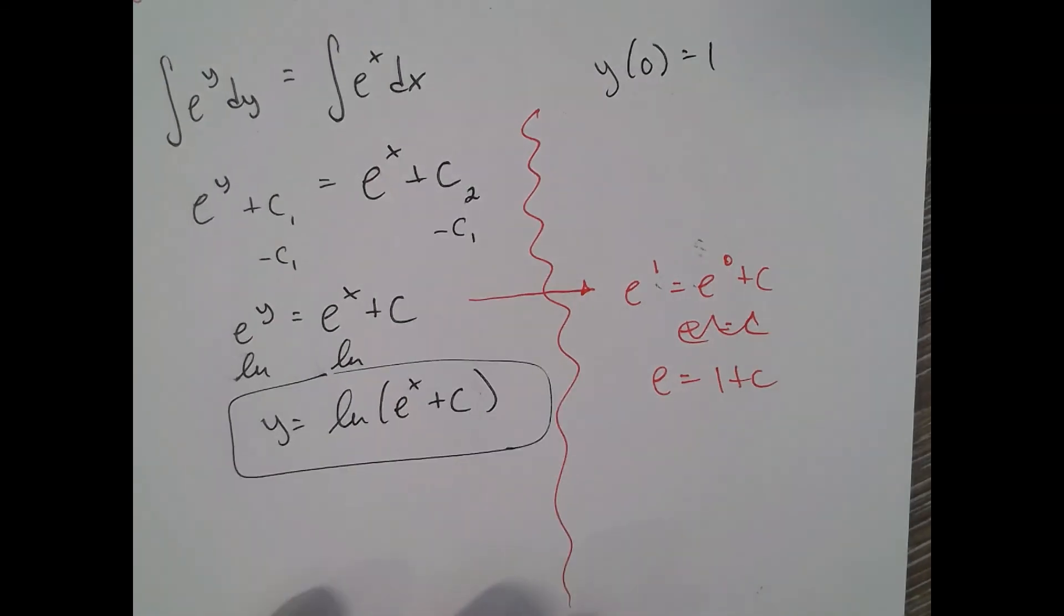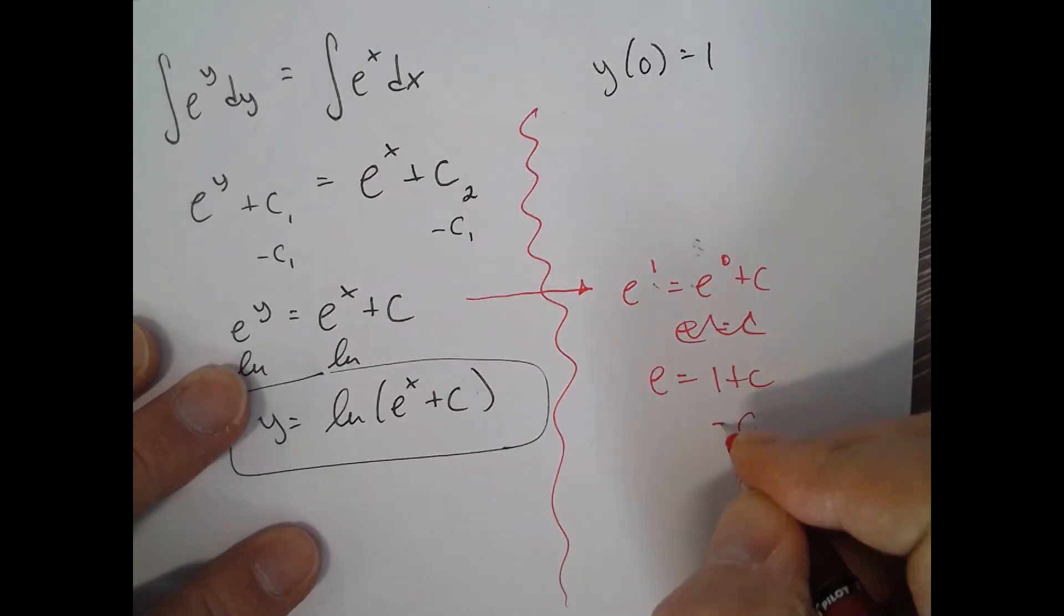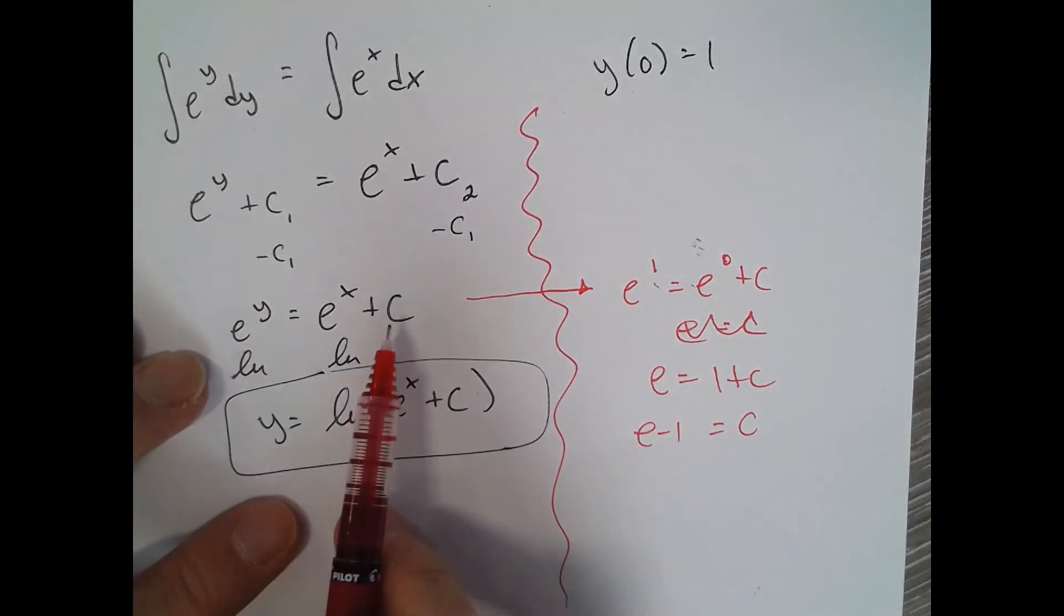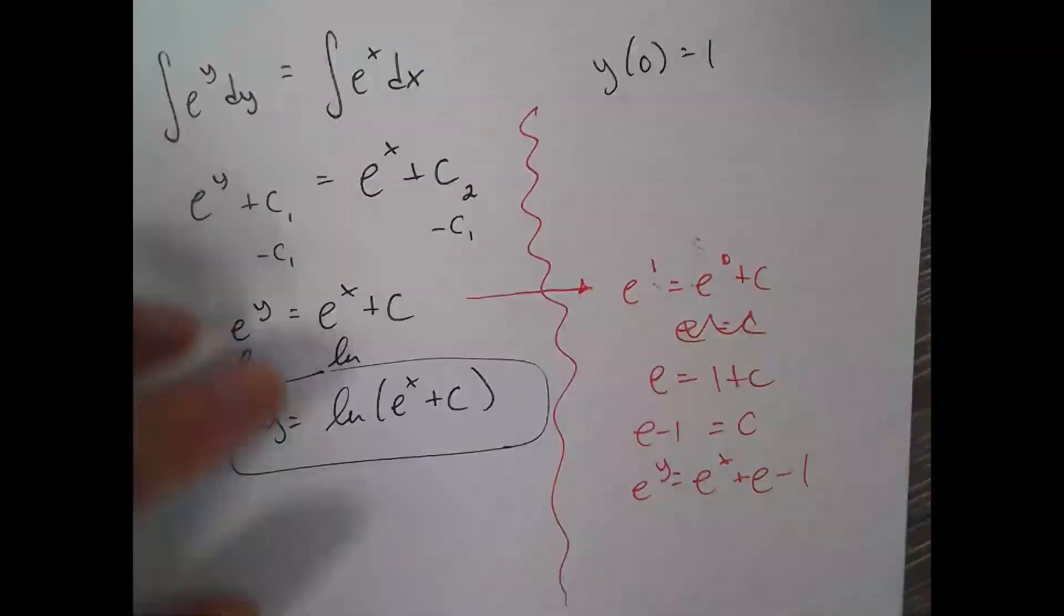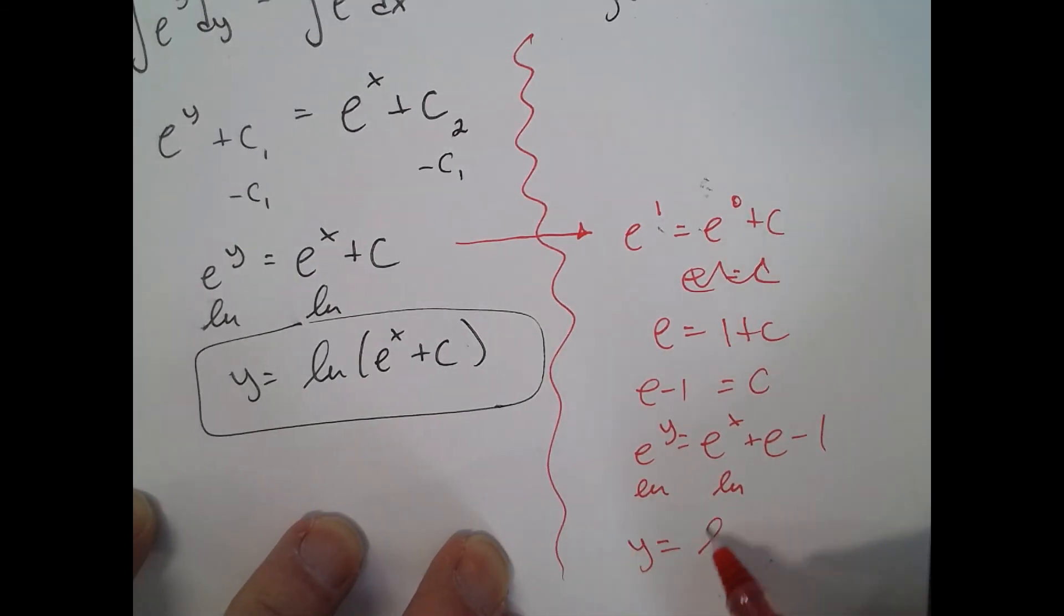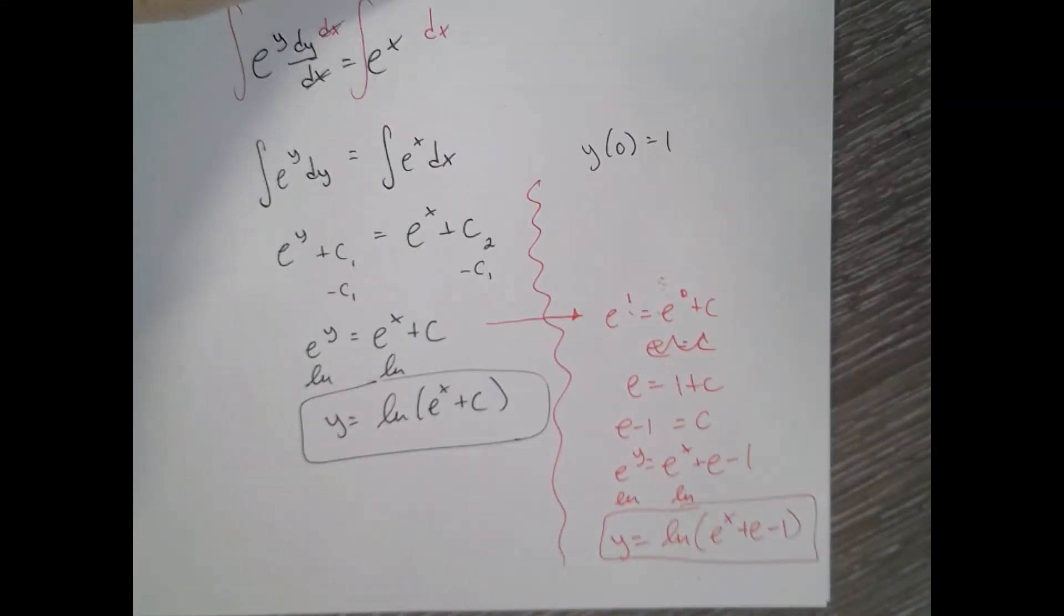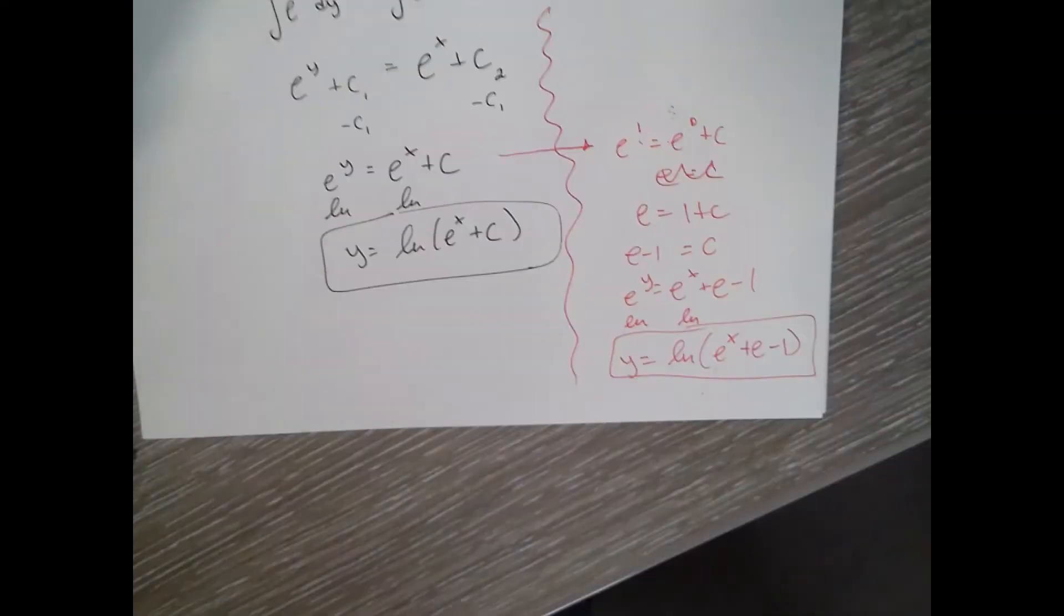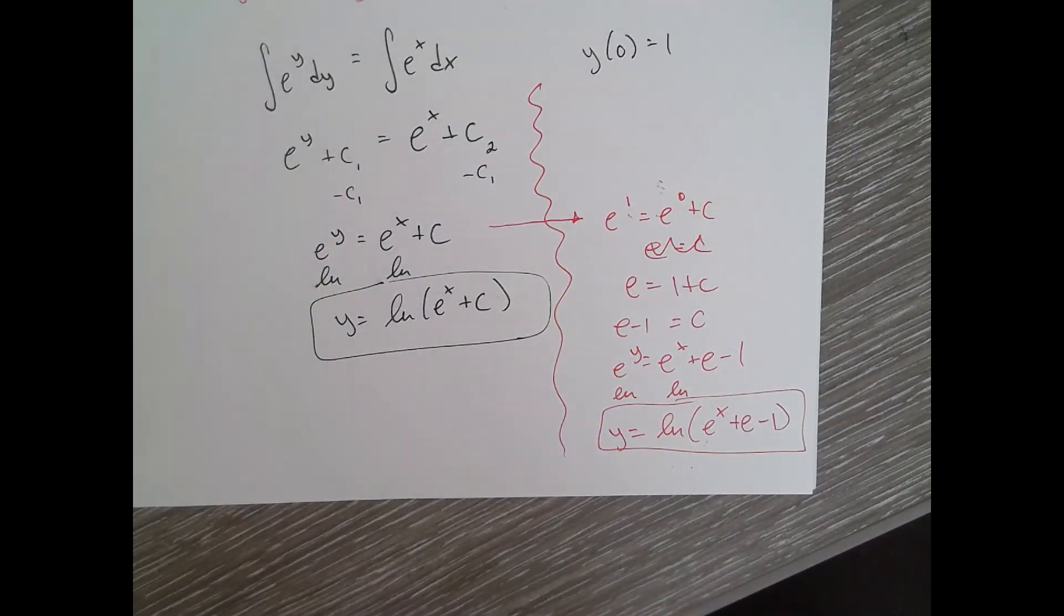So c equals e minus one. Now we can plug that in for c so I get e to the y equals e to the x plus e minus one and then you can do natural log of each side so y equals a natural log of all that stuff. That would be if you had the initial value of zero comma one that would be your answer. All right questions.